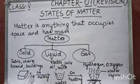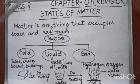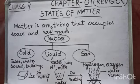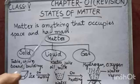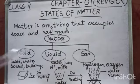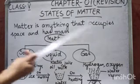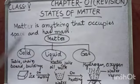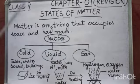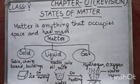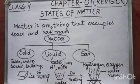Now let us study chapter number 7, States of Matter. First of all, what is matter? Matter is anything that occupies space and has mass.